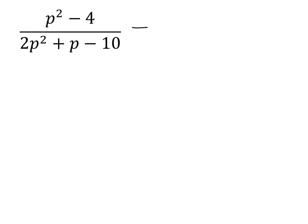So p² minus 4, we're going to split that up using the difference of squares, so that we would have p minus 2, and also p plus 2.